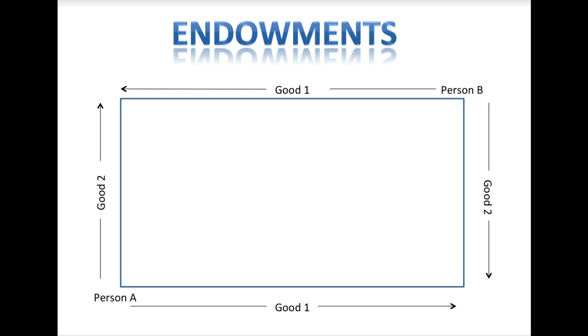Now that we've got the basics of the box established, we can start to analyze a market using the box. We will start by assuming that each person is endowed with a certain amount of each good. We will denote the endowment point with the letter E. The coordinates of this point will tell you how much of each good each person is starting off with. For Person A, measure the horizontal distance from the bottom left corner to point E to determine how much of Good 1 she has. For Person B, measure the horizontal distance from the top right corner to point E. For Person B, measure the vertical distance from the bottom of the box to point E to figure out how much of Good 2 Person A starts off with.